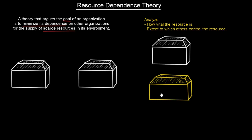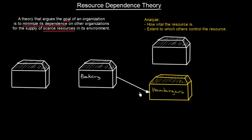Right over here is our organization — let's say some fast food restaurant that produces hamburgers. A scarce resource for us is going to be some special bread. So we are going to have a supplier, and this supplier is going to be a bakery. That bakery is our supplier and is supplying us with bread. Now this bakery is also supplying another restaurant — let's say a fancy seafood restaurant.